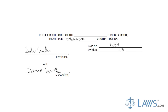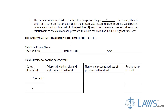The petitioner is to enter their name on the next line and indicate how many children this child custody petition will cover. For the first child, enter their name, gender, place, and date of birth. Enter the child's place of residence during the last five years, providing the address and name of custodian during that time. Enter the same information for any additional children in the next two sections.